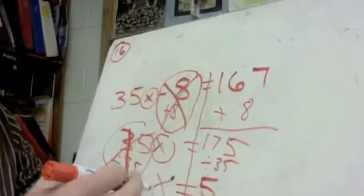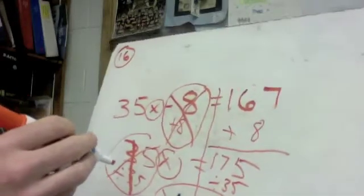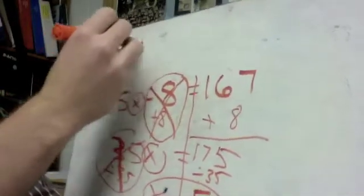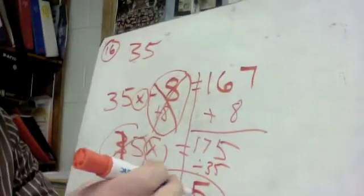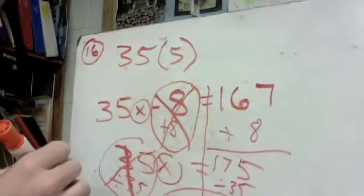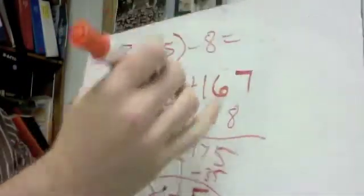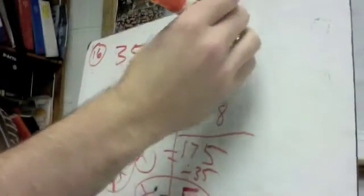So my answer is going to be x equals 5. This stuff's 2 points, 1 point for the correct answer, and then another 2 points for the checking step. If I have 35 times 5, I'll just write it like this, because this means the same thing as multiplication, 35 times 5, minus 8, needs to equal 167.